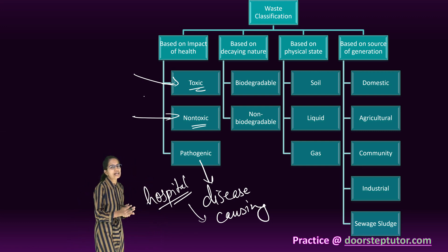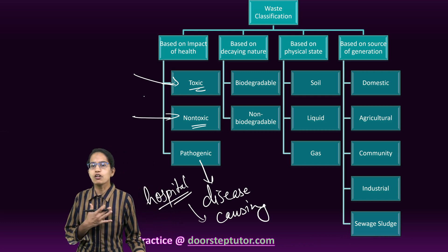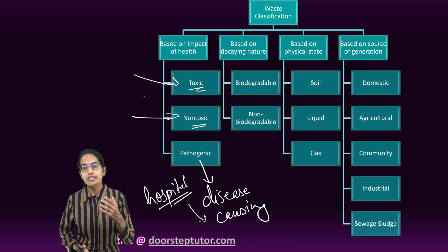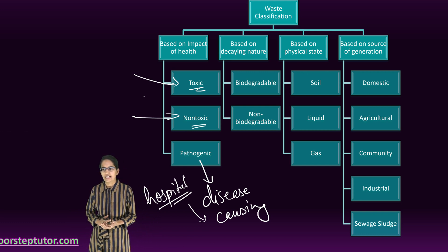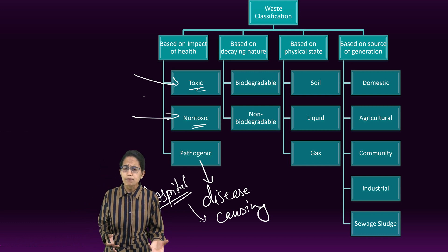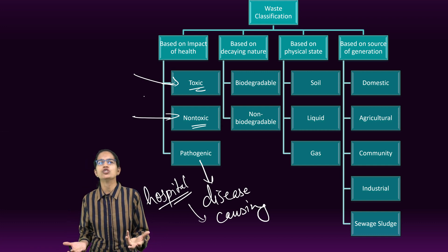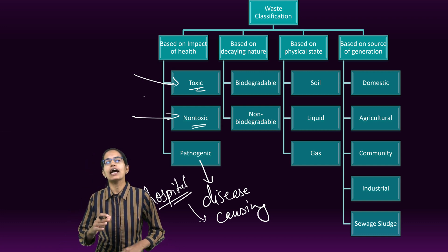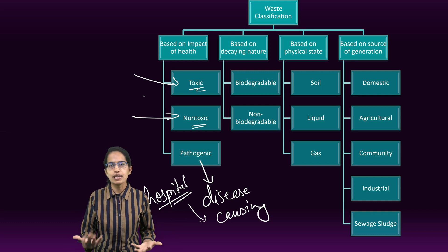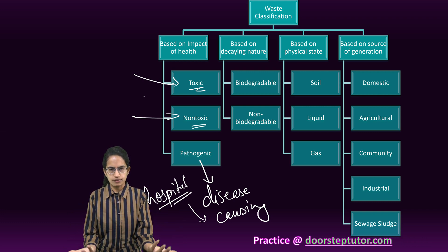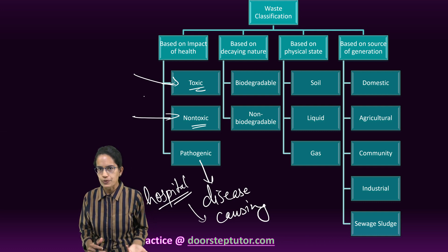The second classification is based on the nature of the substance — whether it is decaying or not. One is biodegradable and the second is non-biodegradable. Paper, wood, wool, and compost are all degradable in the atmosphere and therefore we say they are biodegradable.